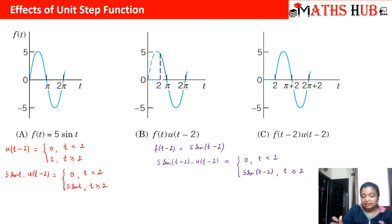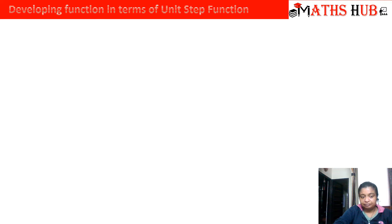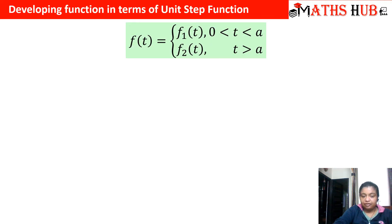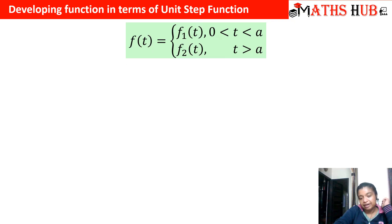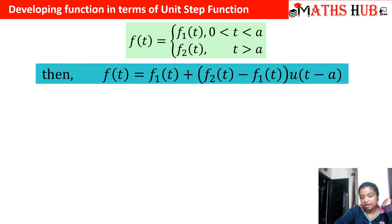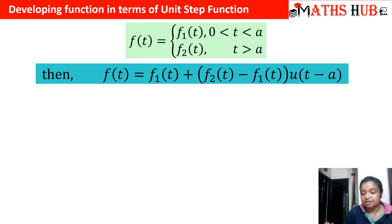I hope you understood the unit step function and its effect when multiplied with a regular function. Now let us see how to express a piecewise function in terms of unit step functions. Given f(t) equals f₁(t) for 0 < t < a, and f₂(t) for t ≥ a, we write: f(t) = f₁(t) + [f₂(t) minus f₁(t)] · u(t minus a).